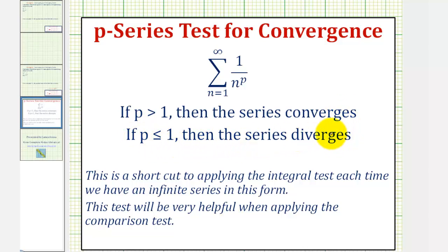Notice when p equals one, we would have the harmonic series, which we know diverges. This is a shortcut to applying the integral test each time we have an infinite series in this form. This test is also very helpful when applying the comparison test.